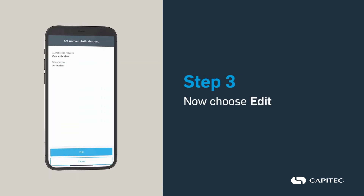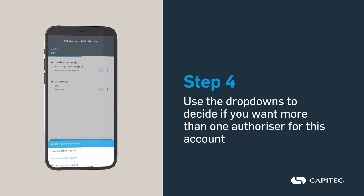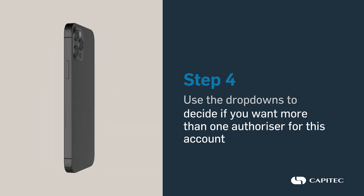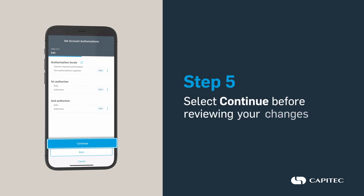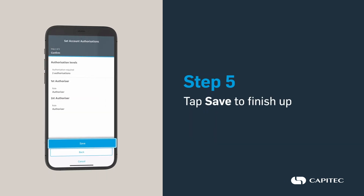Here you'll see the current configuration. Now choose Edit. Use the drop-downs to decide if you want more than one authorizer for this account and what role they should have. Select Continue before reviewing your changes and tapping Save to finish up.